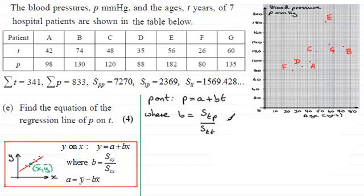And if we substitute our values in, STP was 2369, and divide that by STT, which was 1569.428 and so on. Then we end up with B equaling 1.5094 and so on.